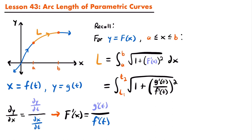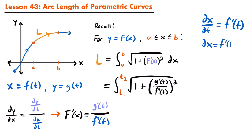All that's left to rewrite in terms of t is dx. Taking the derivative of x with respect to t gives dx/dt equals f prime of t. Solving for dx by multiplying both sides by dt, we get dx equals f prime of t dt. So we replace dx in the integral with f prime of t dt, and our integral representing the arc length is now entirely in terms of t.